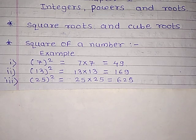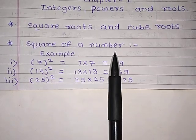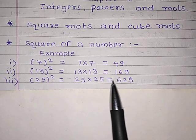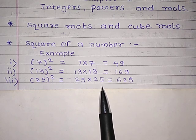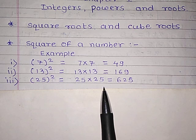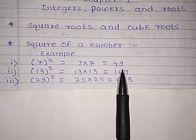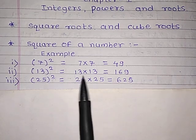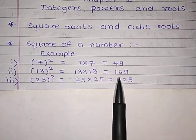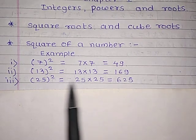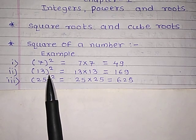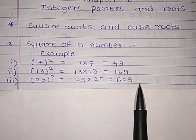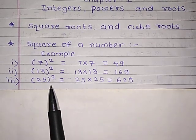First of all, we see what is the meaning of square of a number. A number which is multiplied by itself, we get the answer as its square. For example, 7 multiplied by 7, we get 49 — that is the square of 7. 13 multiplied by 13, we get 169; 169 is the square of 13. Similarly, 25 multiplied by 25, we get 625 — that is the square of 25.